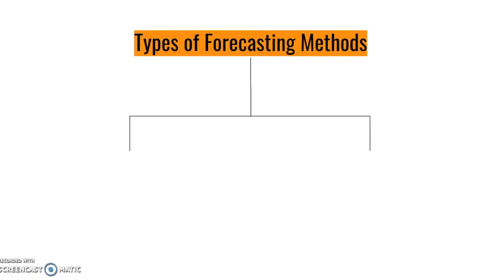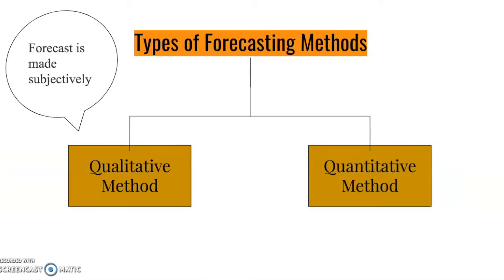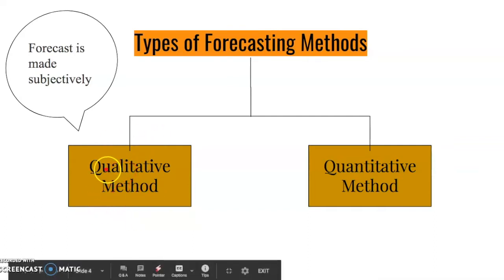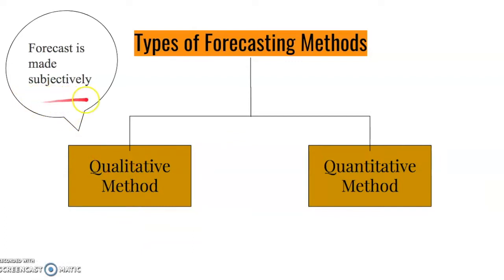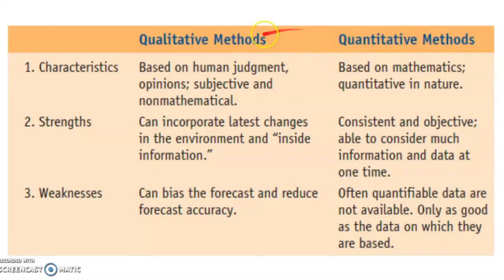Forecasting methods can be classified into two groups: the qualitative method and the quantitative method. Qualitative forecasting methods, often called judgmental methods, are methods in which the forecast is made subjectively by the forecaster — they are educated guesses by forecasters or experts based on intuition, knowledge, and experience. On the other hand, quantitative methods are based on mathematical modeling. Because they are mathematical, these methods are consistent — the same model will generate the exact same forecast from the same set of data every time, and they are also objective. I have provided here a table which shows these two categories and their characteristics.